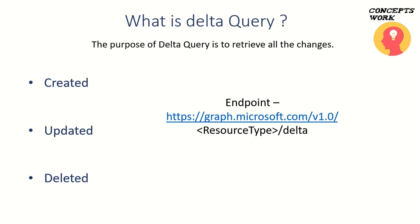All you have to do is, for the first request that you are sending to a specific endpoint with the resource type, just add this keyword called Delta. And now let's understand how exactly it is going to work and why you should implement this particular feature in your application.